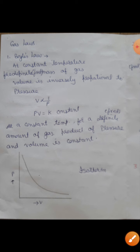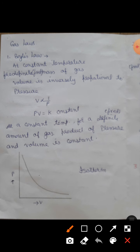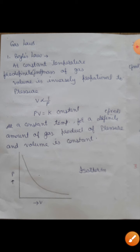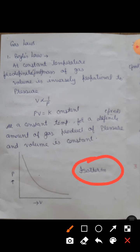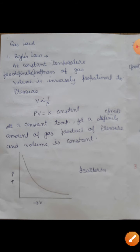अगर हम graph खींचते हैं - X-axis पर volume और Y-axis पर pressure को plot करते हैं - तो P decrease होने के साथ-साथ V बढ़ता है। Temperature constant है इसलिए इस graph को isotherm कहते हैं। तो Boyle's Law क्या कहता है: at a constant temperature, volume is inversely proportional to pressure, PV is a constant, और यह isotherm हमें बताता है।